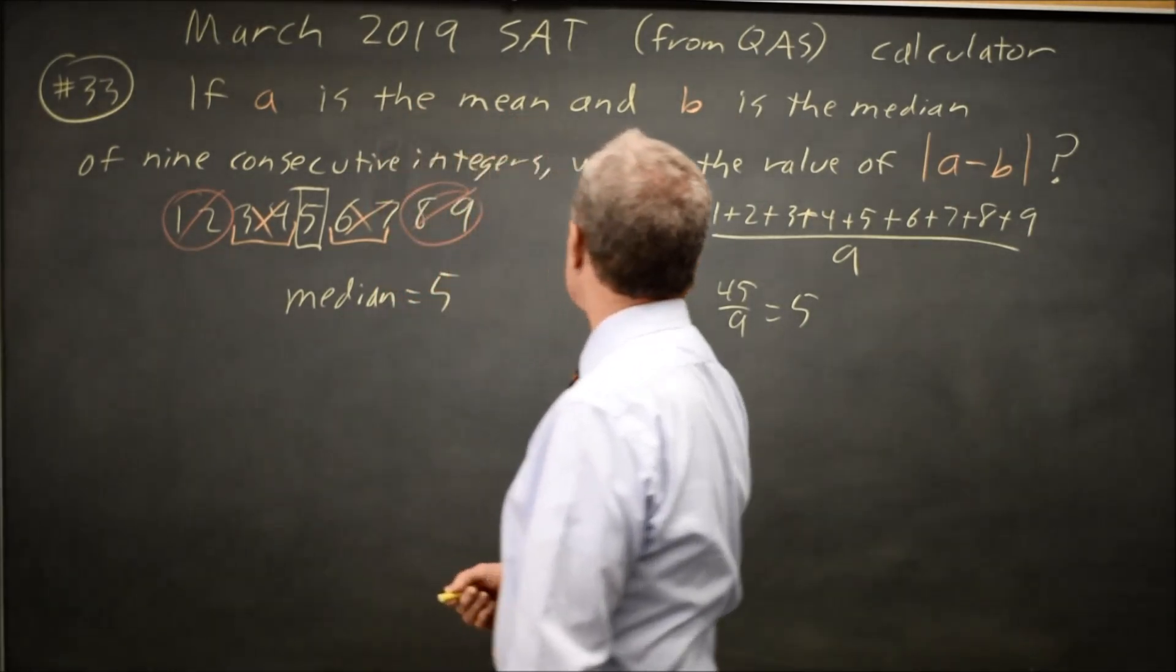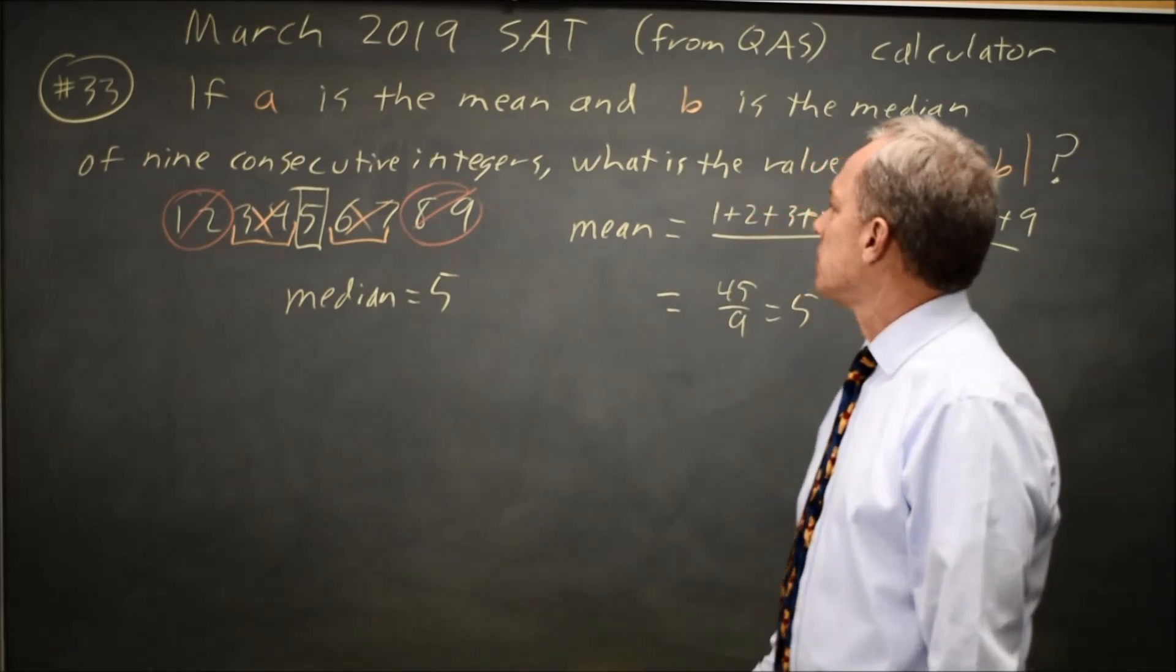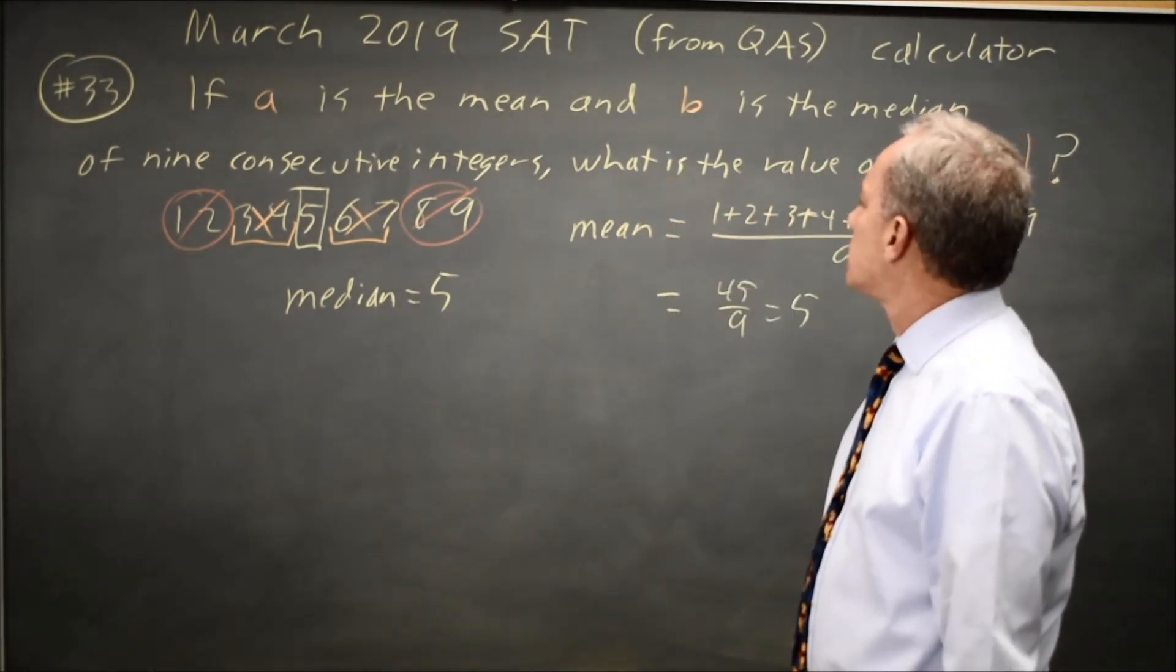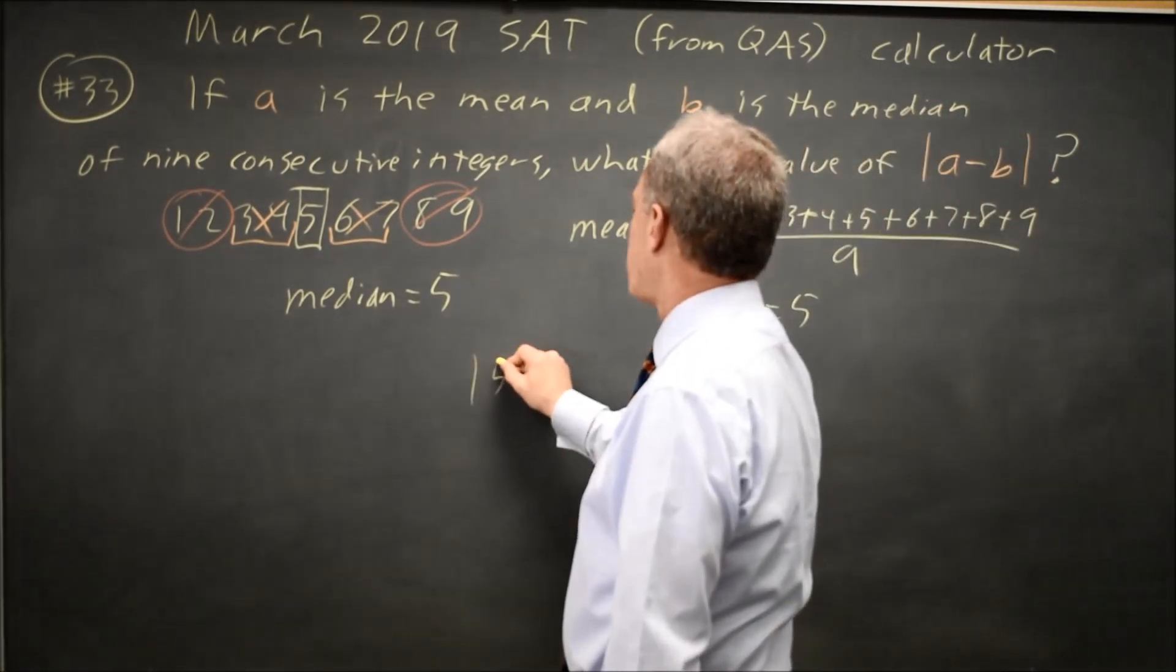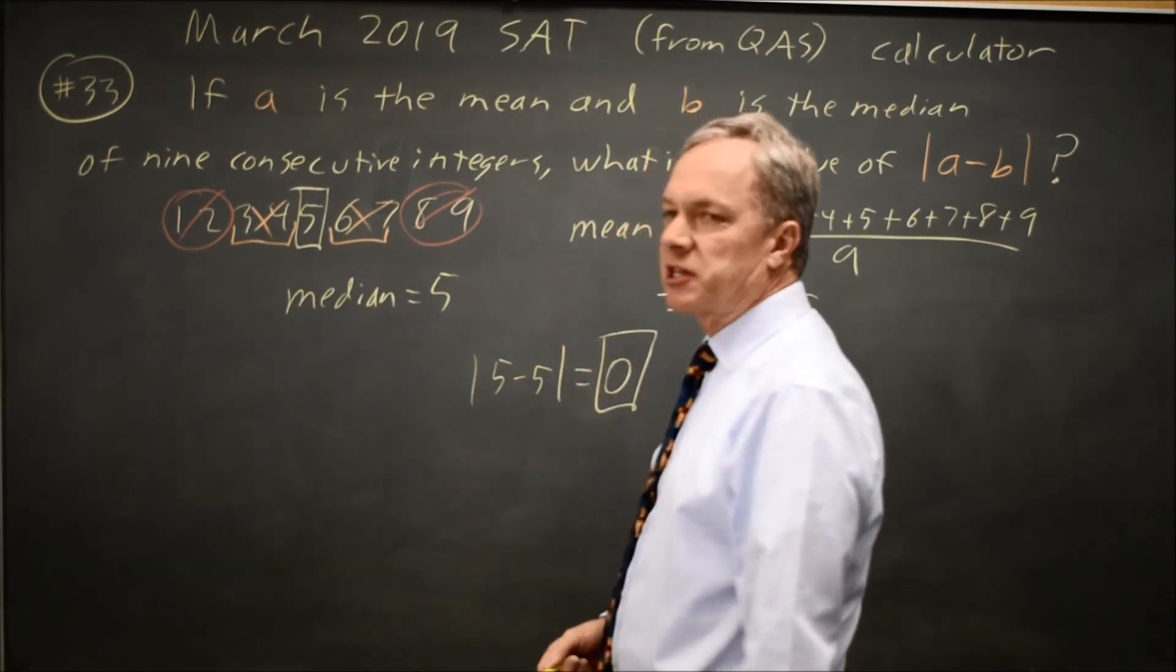Since the mean and median are both five for the numbers I made up, the absolute value, five minus five, which is zero, has to be an acceptable answer.